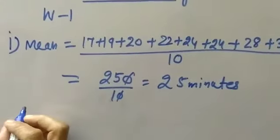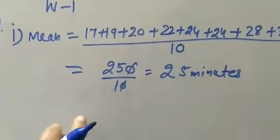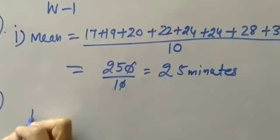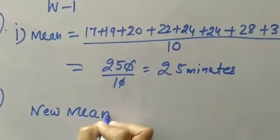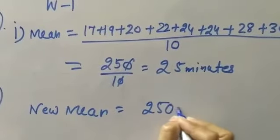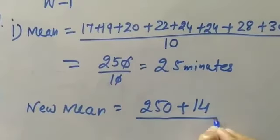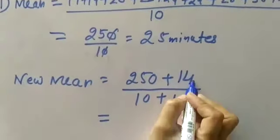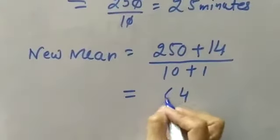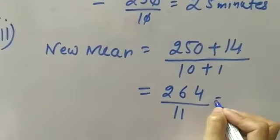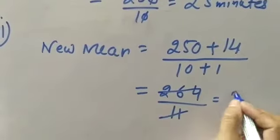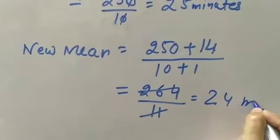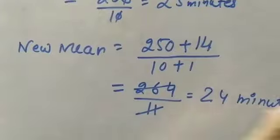Second part: find the new mean if another student who took 40 minutes is also included. For new mean, whatever number you got was 250. When 40 is included, plus 40. So now 10 becomes 11, plus 1. 250 plus 40 equals 290 upon 11. You will get 26.36 approximately. This is the new mean.